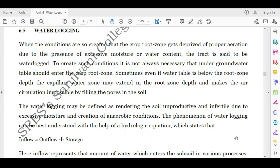To create such conditions, it is not always necessary that groundwater table should enter the crop root zone. Sometimes even if water table is below the root zone depth, the capillary water zone may extend in the root zone depth and makes the air circulation impossible by filling the pores in the soil.